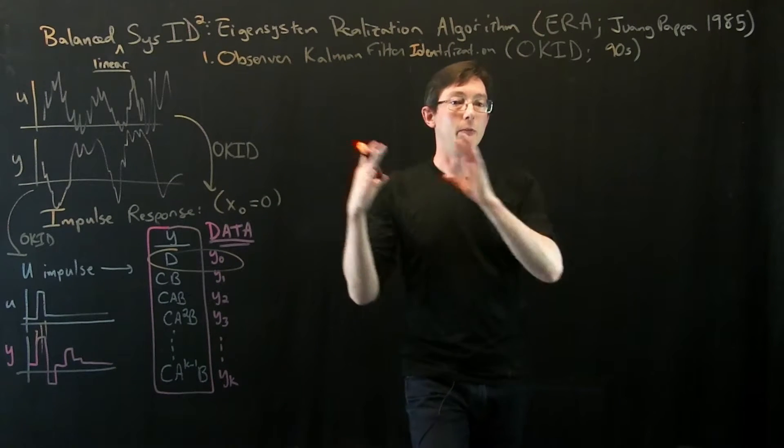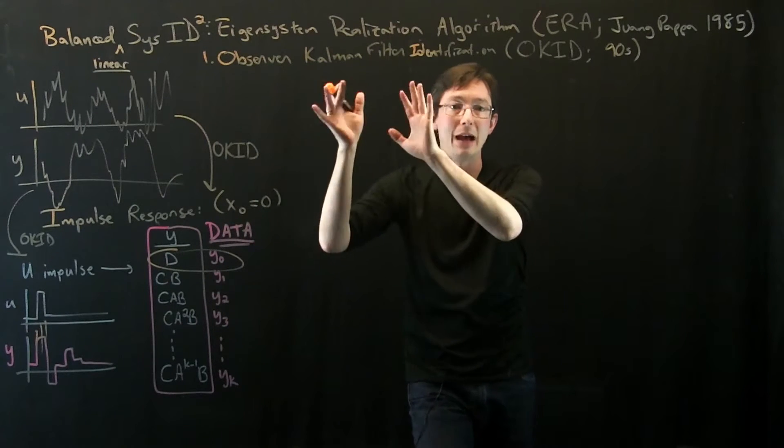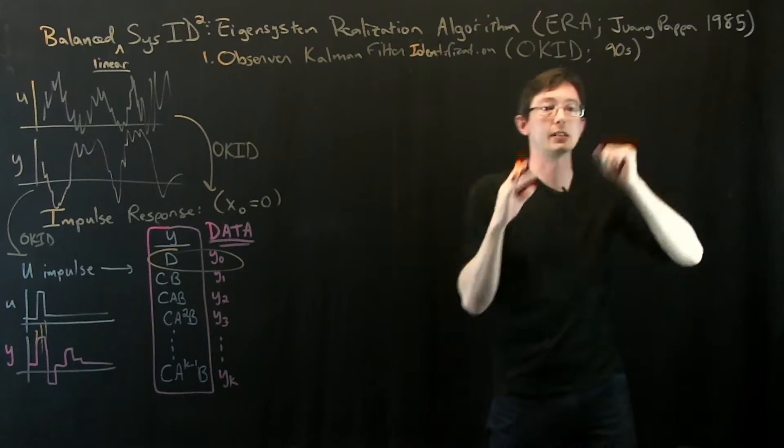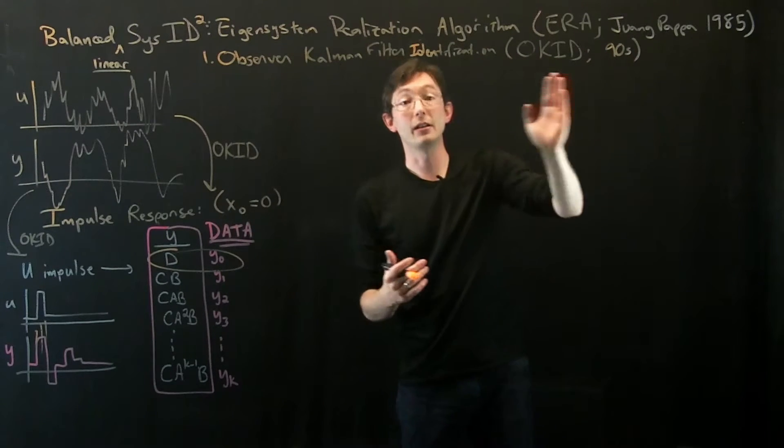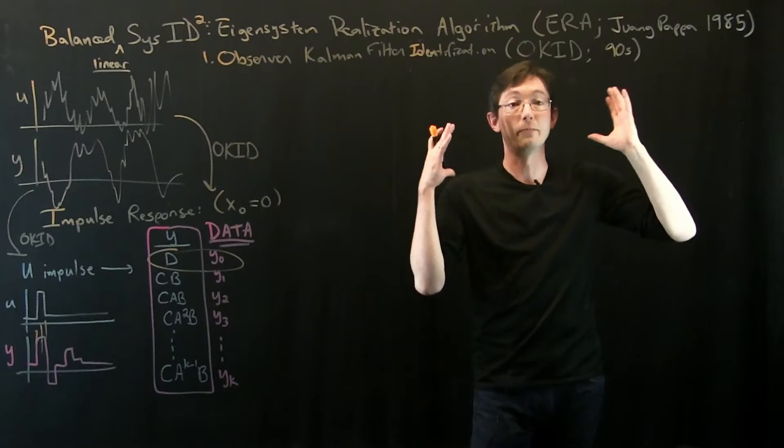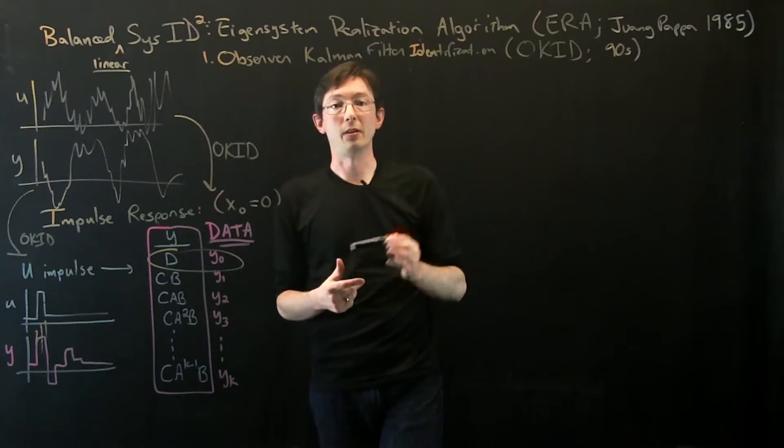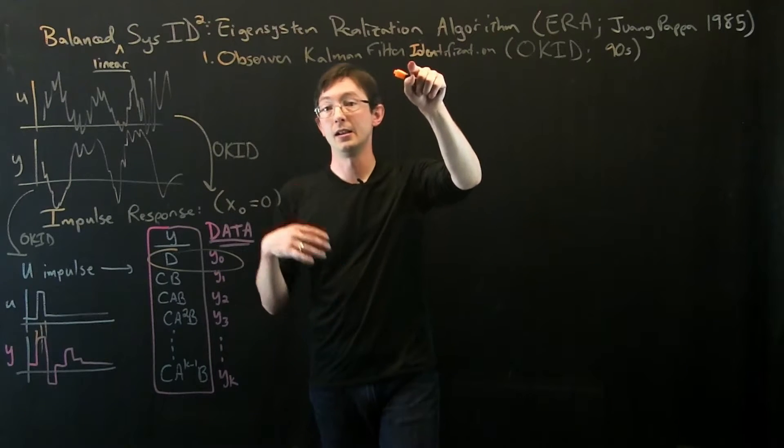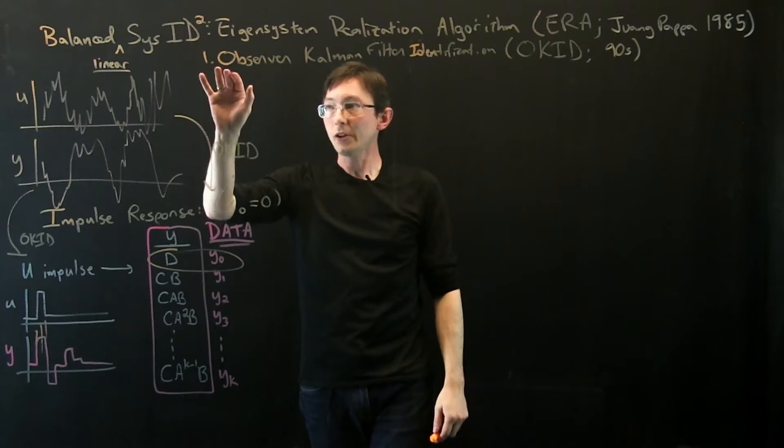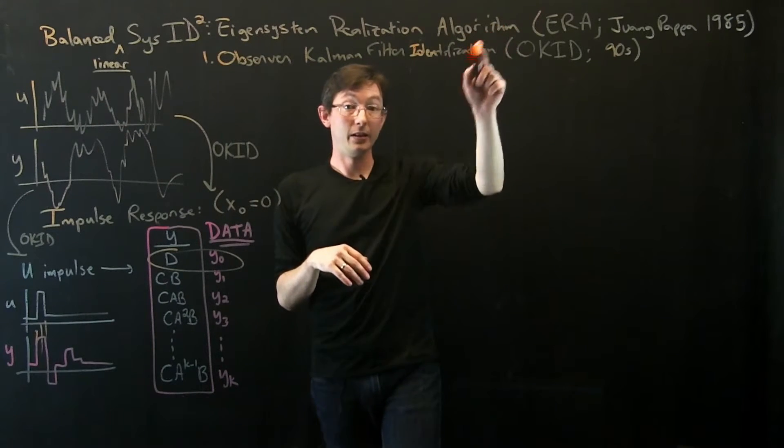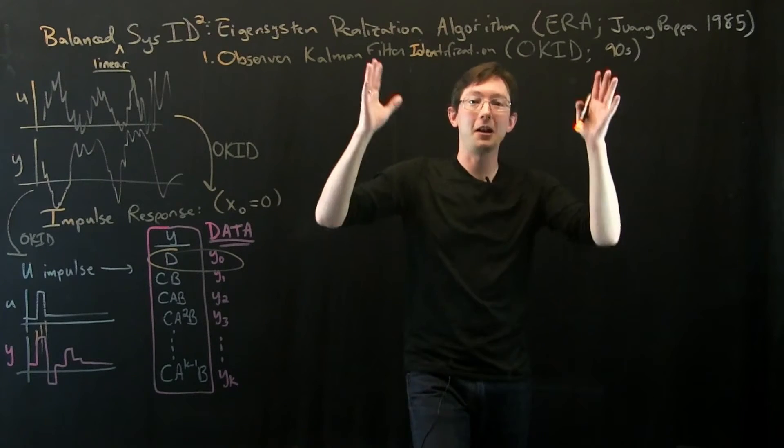This is probably about as deep down the rabbit hole as we're going to get in this entire modern data-driven control lecture series. We've already gone from linear system identification to balanced models to balanced truncation to Eigensystem Realization to Observer Kalman. I mean this is like many layers deep in terms of bringing out heavier and heavier guns to solve harder and harder problems.